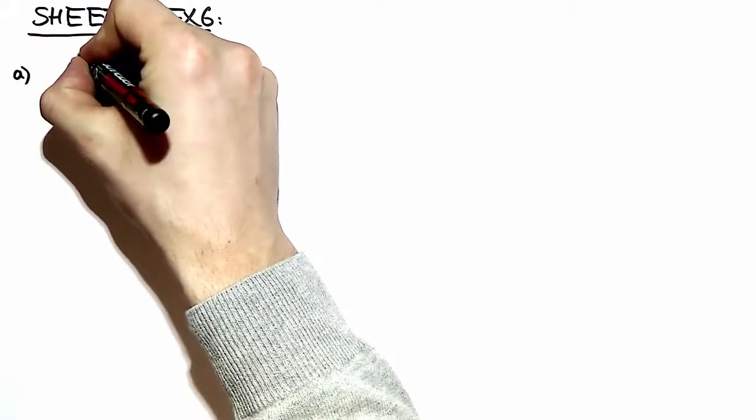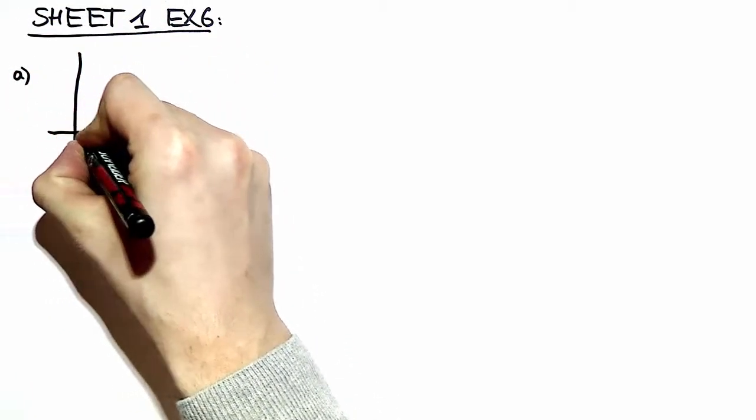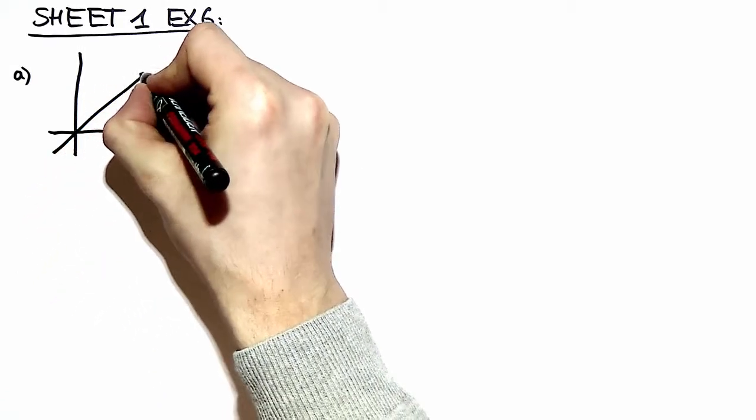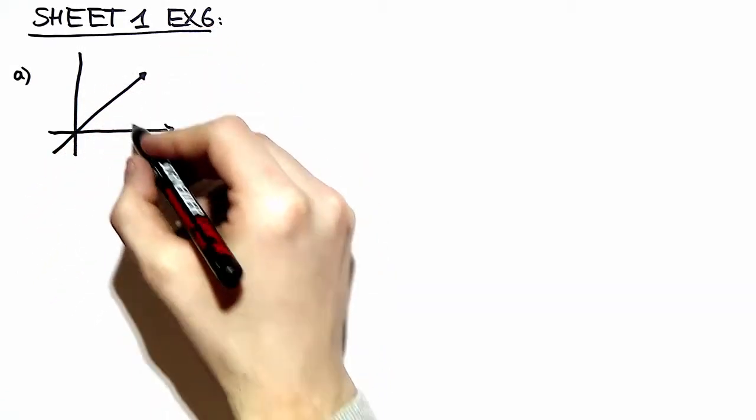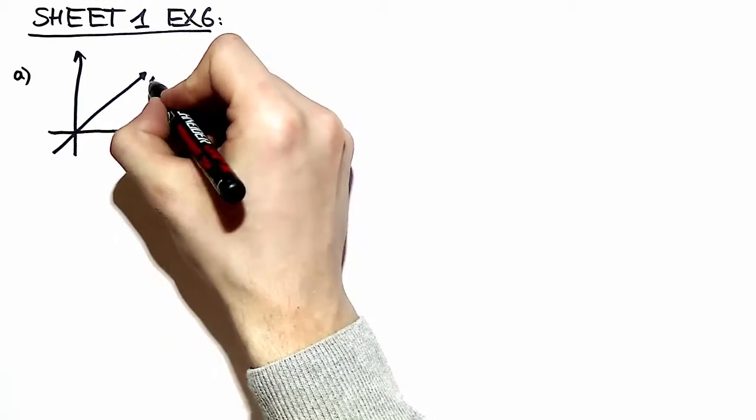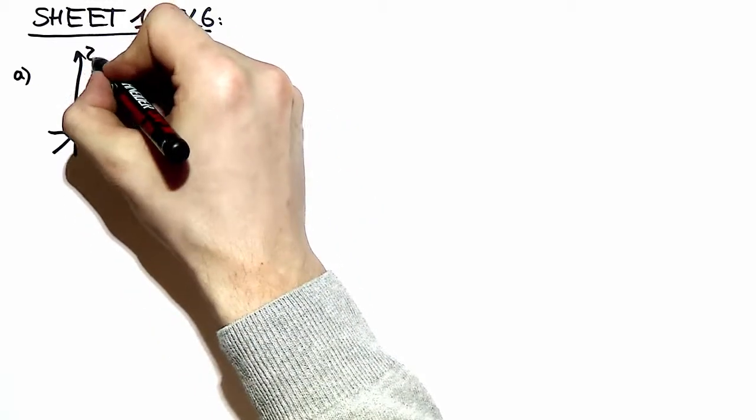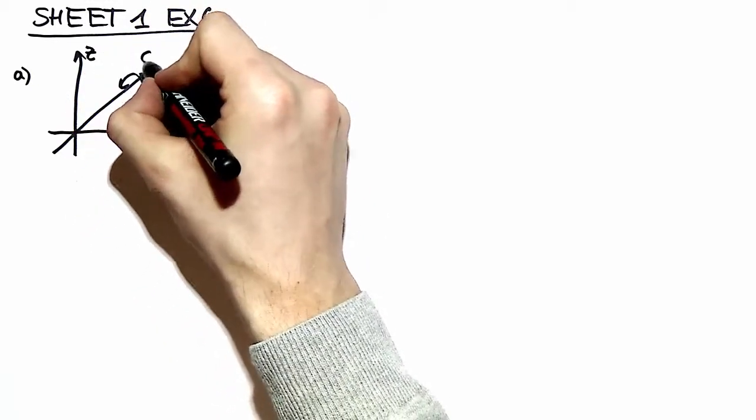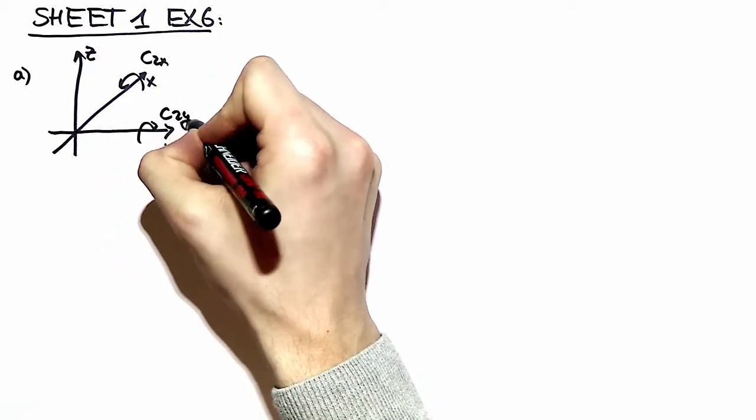We start off by part A where we have two twofold rotational axes perpendicular to each other. We can say without loss of generality we can put one of them to be C2X and the other one to be C2Y.